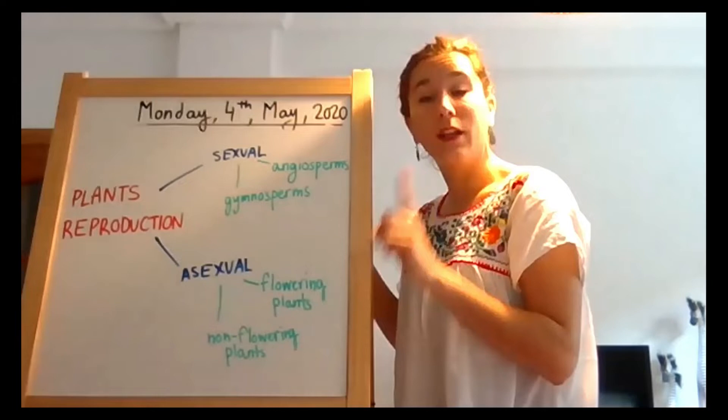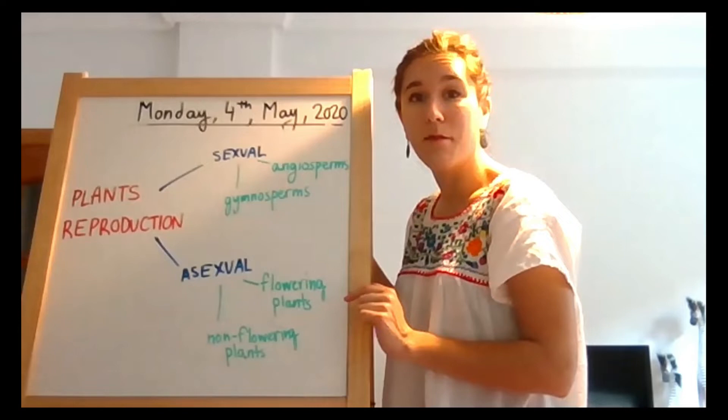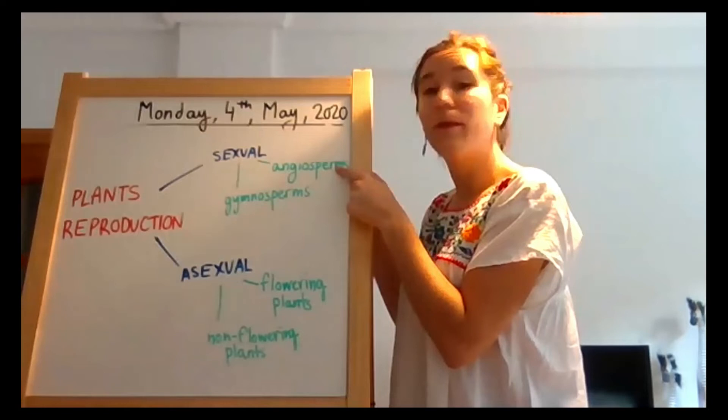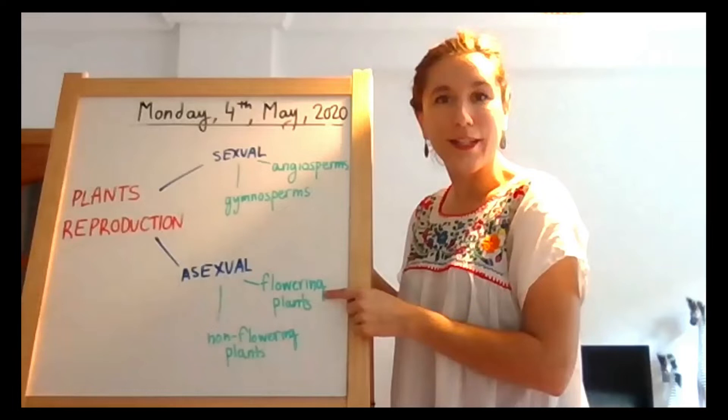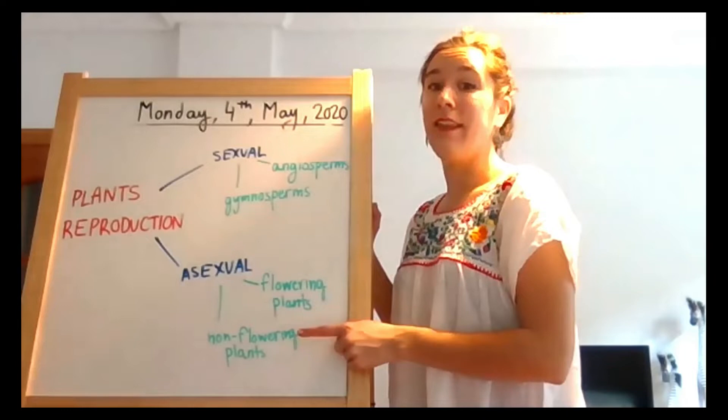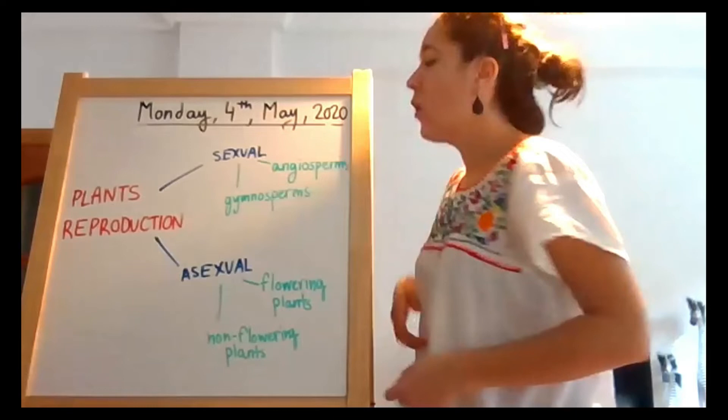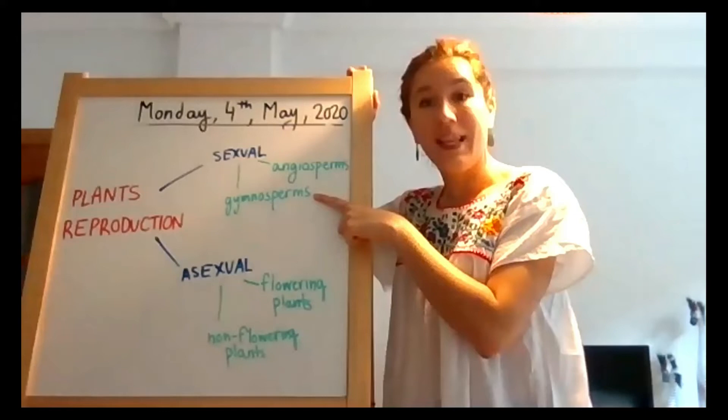Asexual reproduction is found in flowering plants and non-flowering plants. Be careful and don't get confused — just because they are called flowering plants doesn't mean they are the only plants with flowers. Angiosperms have flowers, gymnosperms have flowers, and flowering plants obviously have flowers. Non-flowering plants are the only type that don't have flowers.